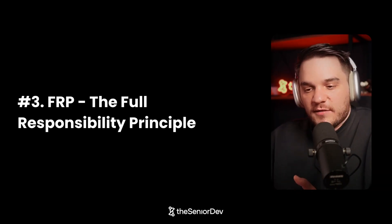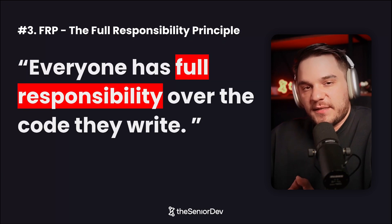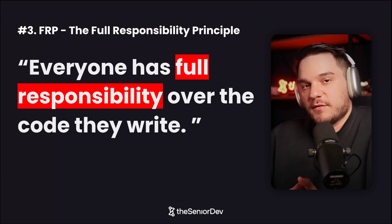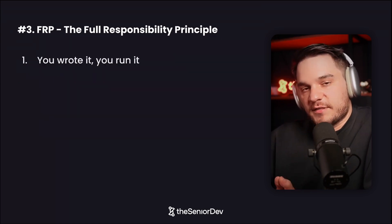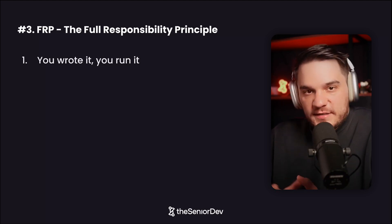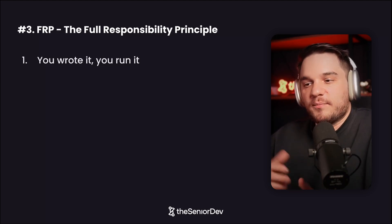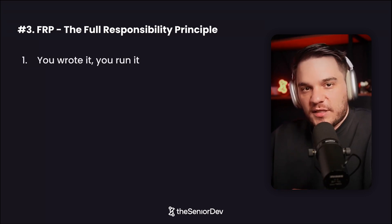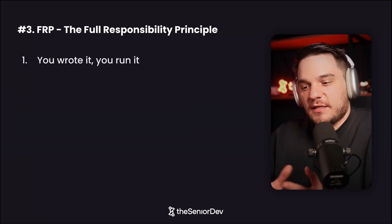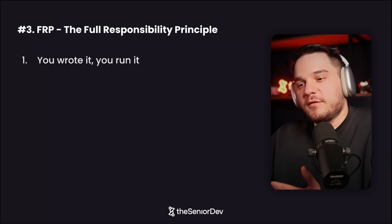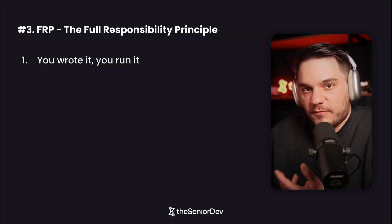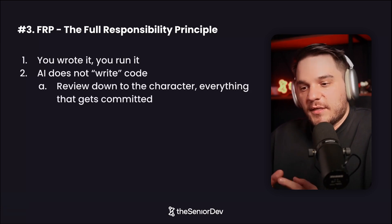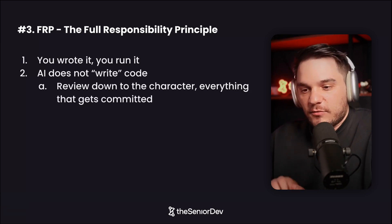Moving on to number three — what I call the full responsibility principle. Everyone has full responsibility over the code they commit or they write. It doesn't matter if you generated it with AI. If you commit that to the code base, it's on you. If you wrote it, you run it, you are responsible — it's end to end. We cannot just generate some code, throw it out there, and have our colleagues taking a heavy load of doing the pull request review and going through all that AI-generated garbage. A lot of people on YouTube talk about generating solo projects, but a lot of developer work is very collaborative, and we need new standards now that these tools can generate code very fast. AI doesn't write code — humans write code. So you want to review your code down to the character, down to every line.